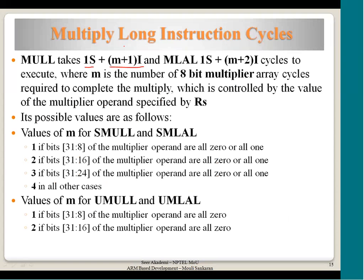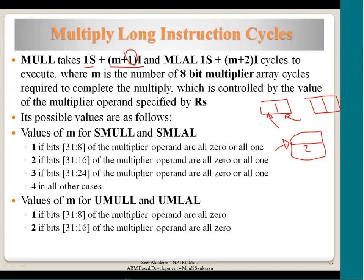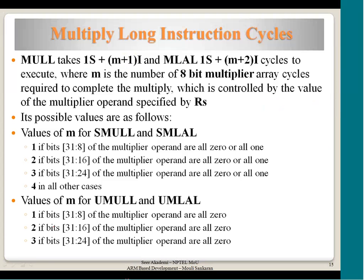The cycle time for multiply long instructions is 1S plus M+1 internal cycles, with an extra cycle compared to 32-bit multiply because it involves a 64-bit result requiring one additional internal cycle to write the result back to two registers in the register file. M is still determined by the significant value of the multiplier operand RM.